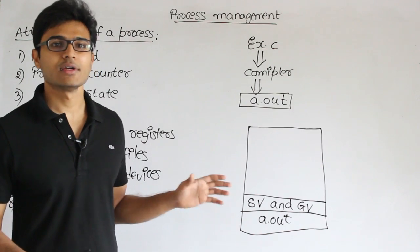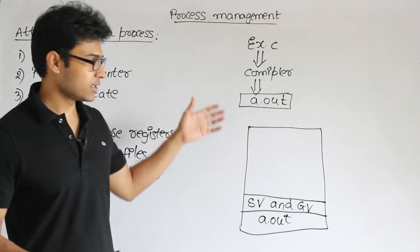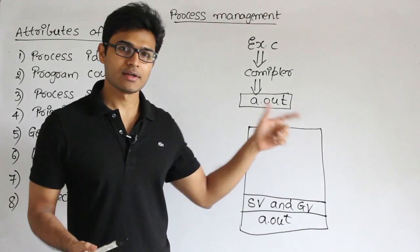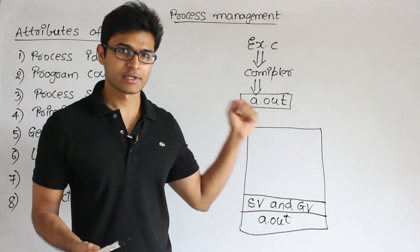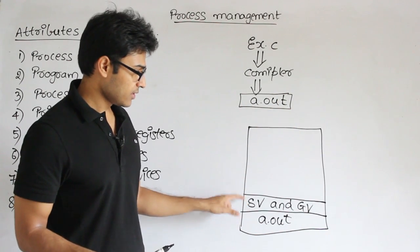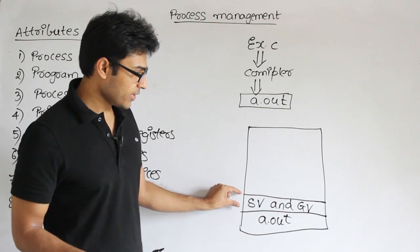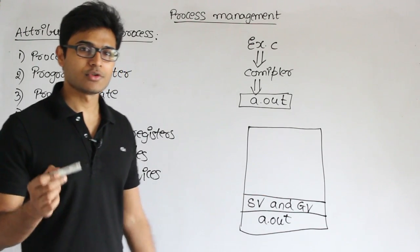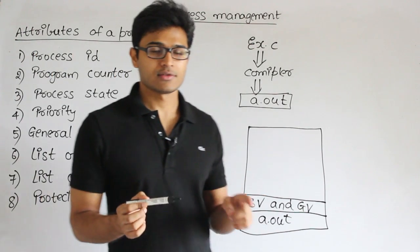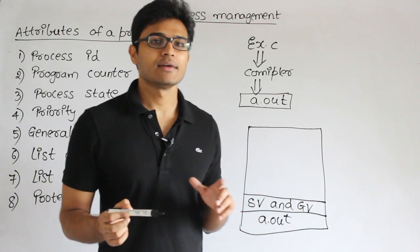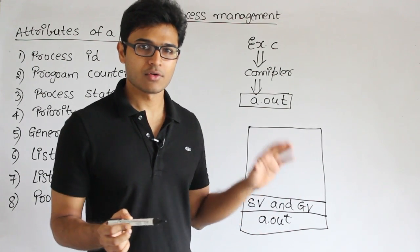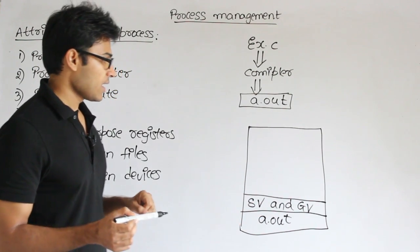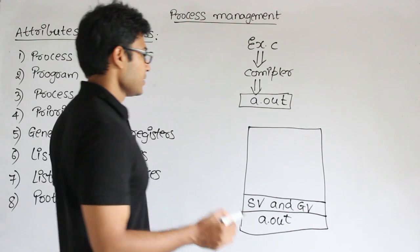Static variables and global variables — global variables are also a kind of static variable which have to be given access to everything in the process. These two variables, static as well as global, are supposed to be created once and they are supposed to exist forever, so they are going to be there for the entire lifetime of the process.